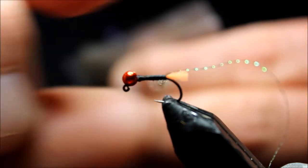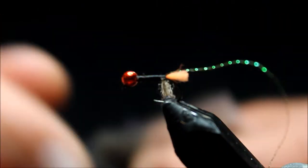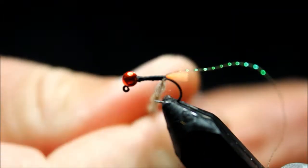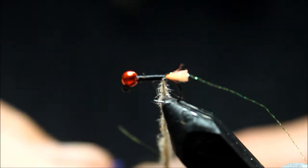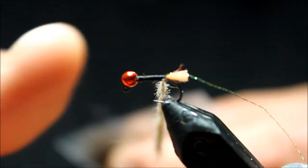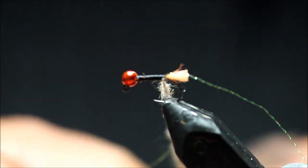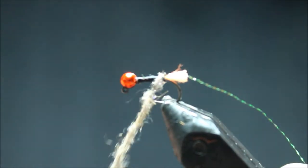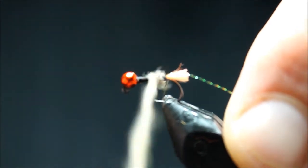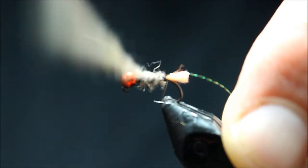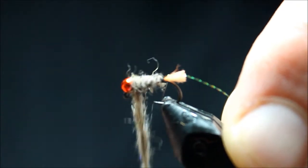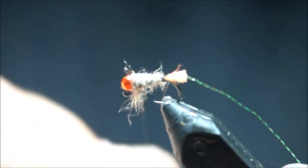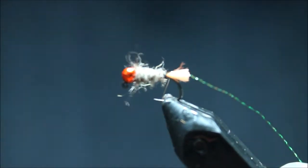This particular dubbing is a blend that I make that you can also purchase. It's natural rabbit along with some fox squirrel for spikiness, and then a couple of UV ice colors to give it a little bit of a sparkle. I like the UV stuff. I do think it adds something to a lot of the flies.